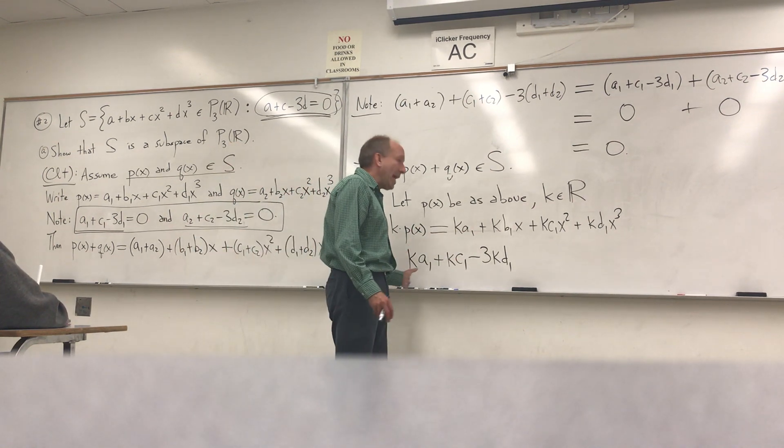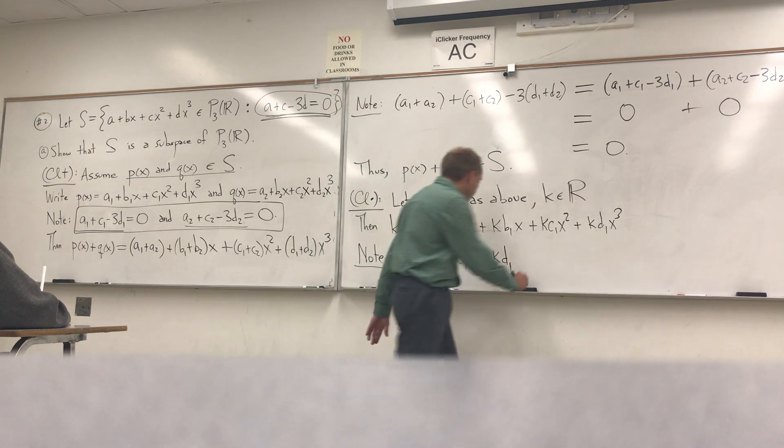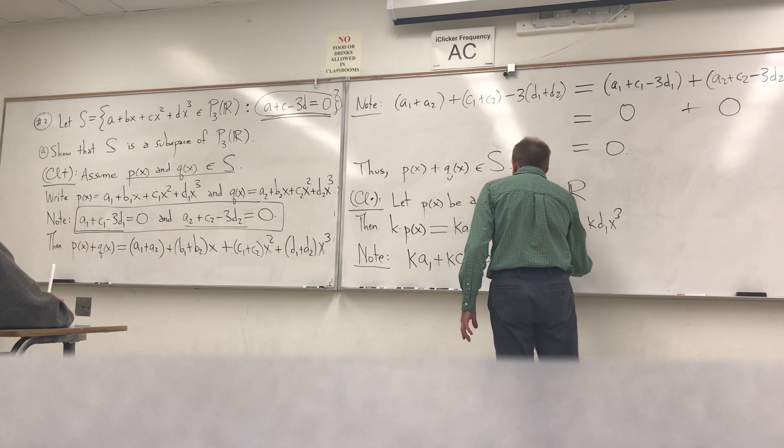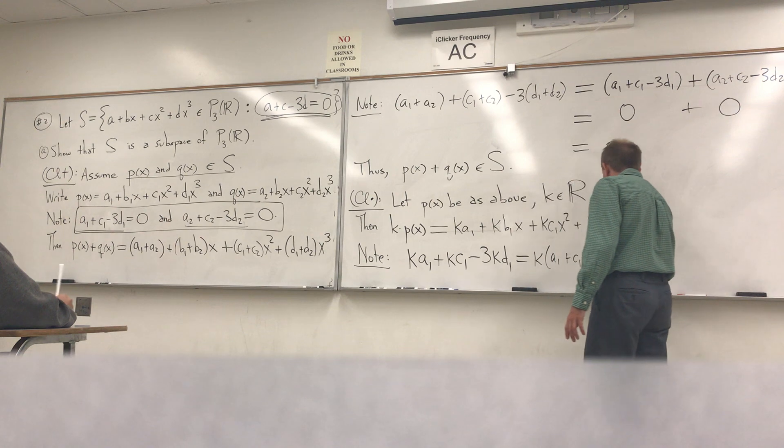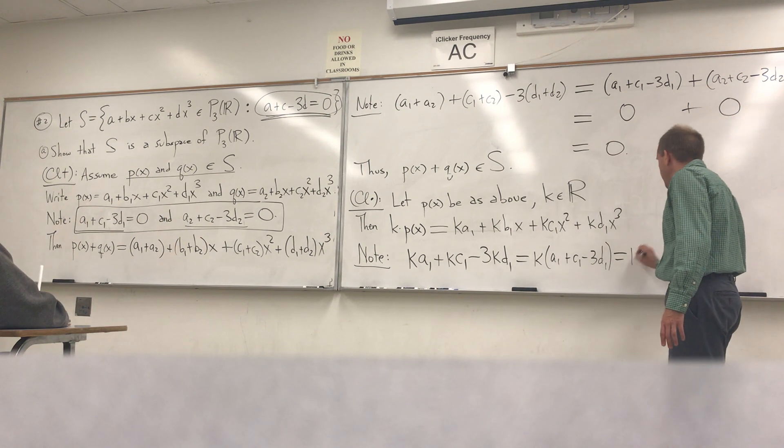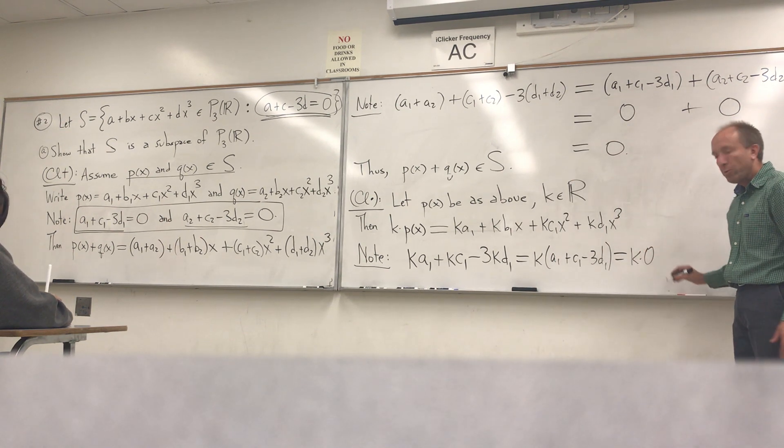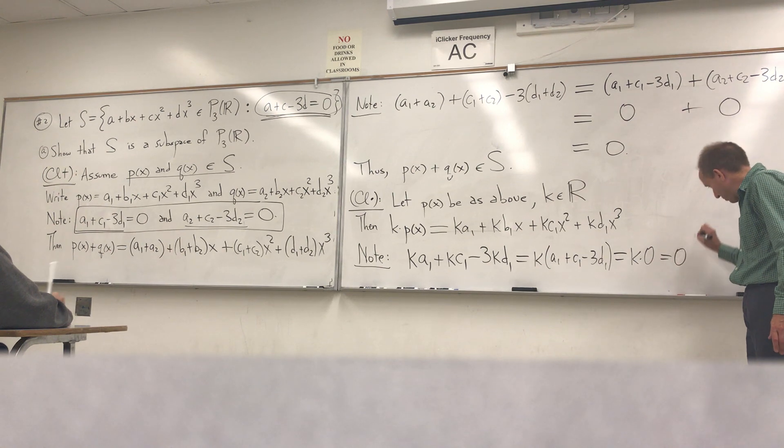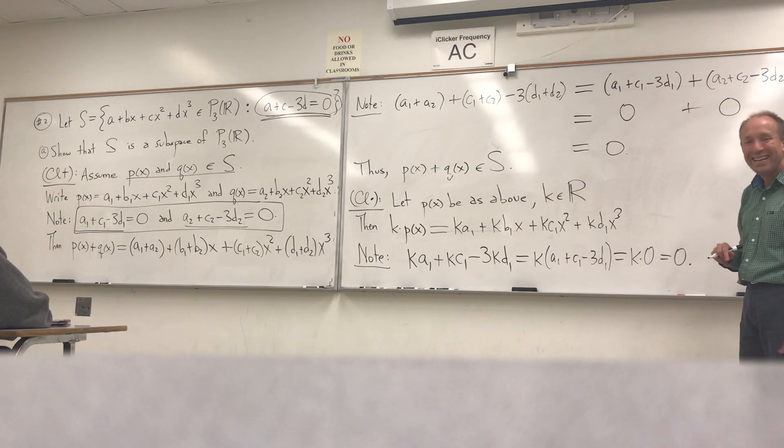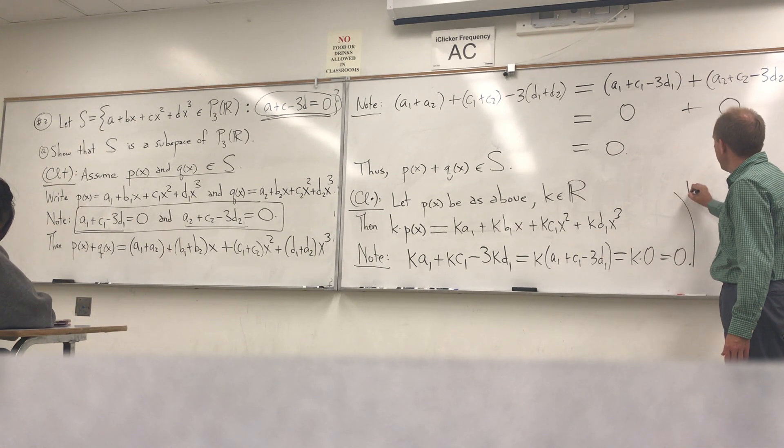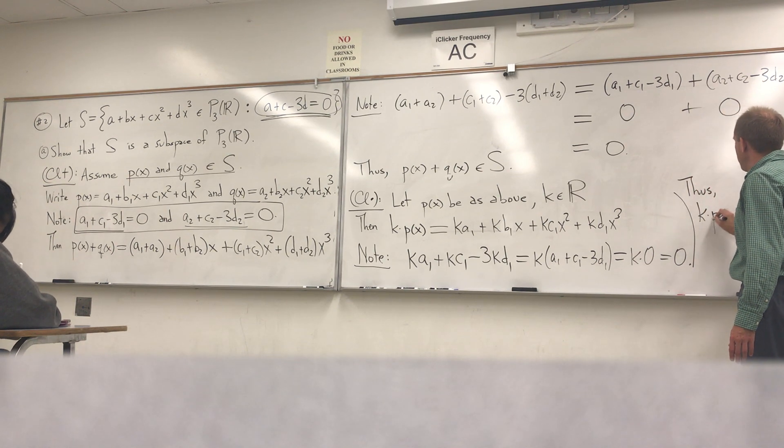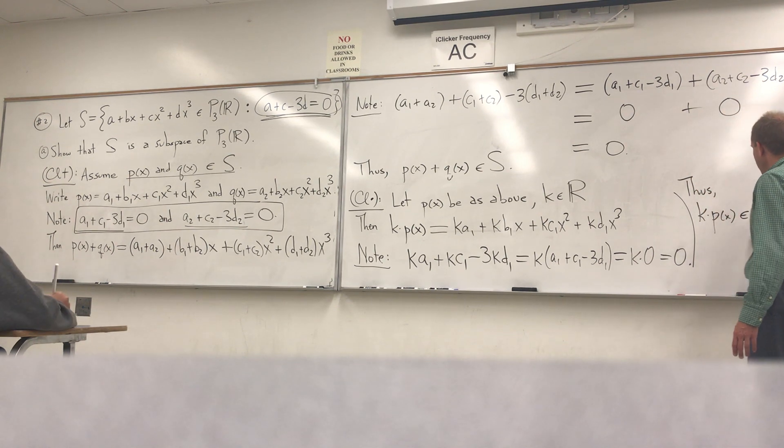Does everybody see that? There's a k in each term. You definitely want to pull it out. So we pull out the k, and we get a1 plus c1 minus 3d1, and that's just k times zero, which is zero. That's great. That's what we wanted. So now we can say, thus, k times p of x is an element of S.